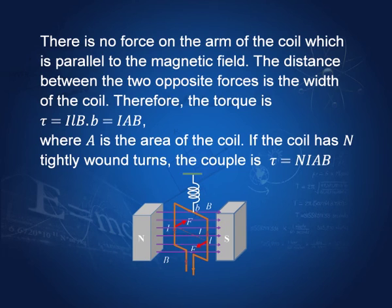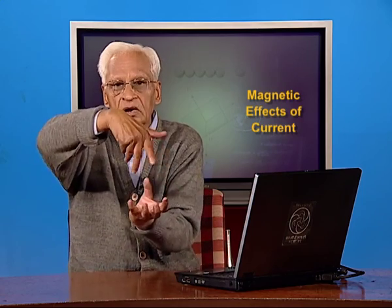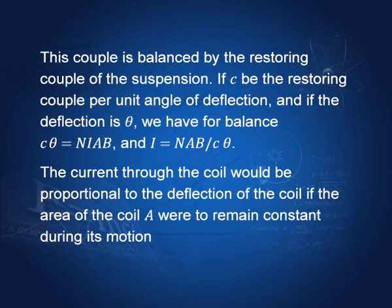This torque tends to rotate the coil and the suspension opposes this motion. After some deflection, the two reach equilibrium. At equilibrium, if C is the couple per unit radian of the suspension, then C theta equals N I A B, giving I equal to (N A B / C) times theta. So I is proportional to theta, provided A remains constant. We will see how we can make A constant and why if A is not constant, I is not proportional to theta.